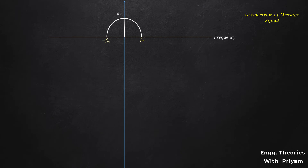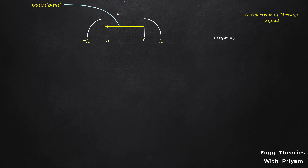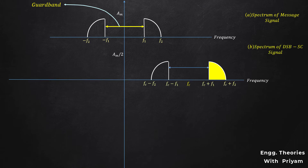This is the spectrum of the message signal with frequency FM, and this is the spectrum when the positive and negative parts of the message signal are separated by a guard band. After separation, the positive frequency is from F1 to F2 and the negative frequency is from −F1 to −F2. When we apply DSB-SC modulation, the carrier is suppressed and the upper and lower sidebands remain separated by the guard band — the upper sideband from FC+F1 to FC+F2 and the lower sideband from FC−F2 to FC−F1.